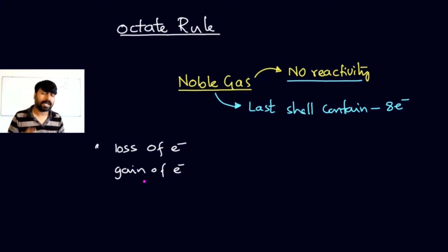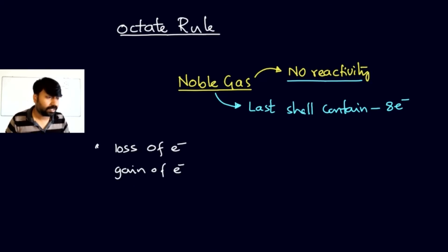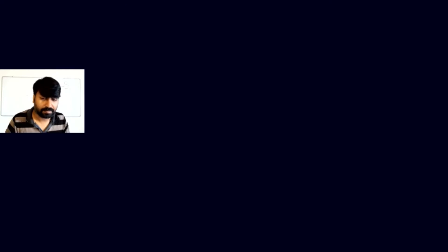The atom can get eight electrons in its outermost shell by those two ways. Now let's understand what Lewis structures are and how we can represent them.